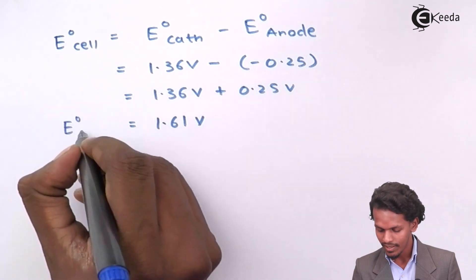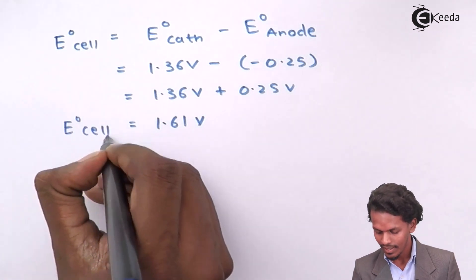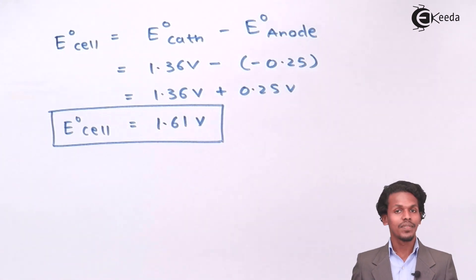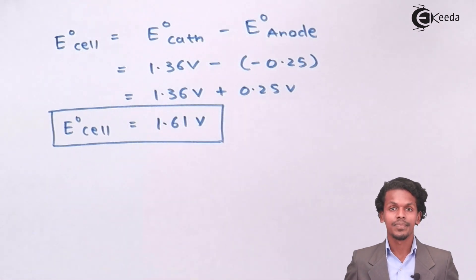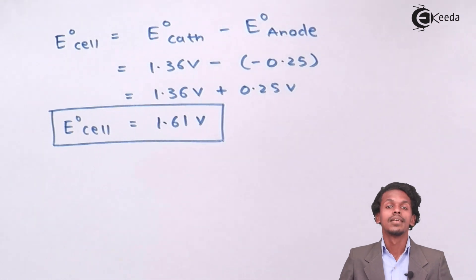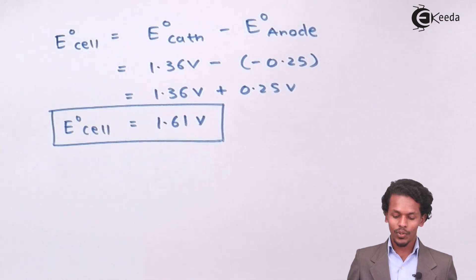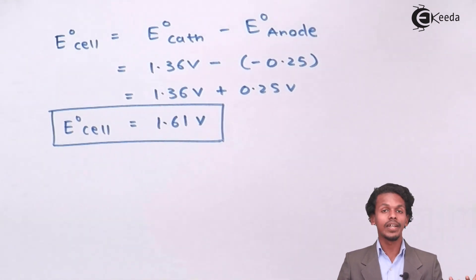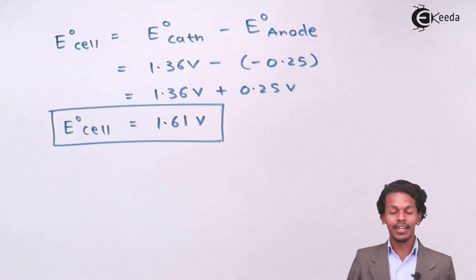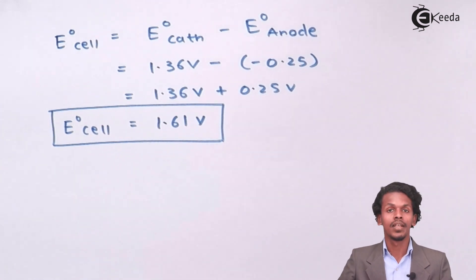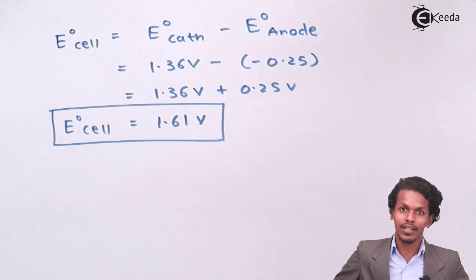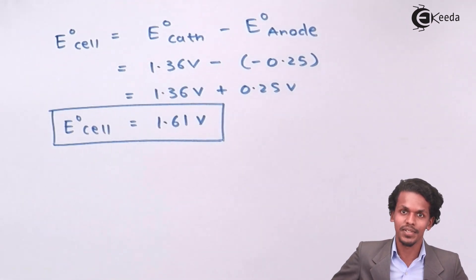So the overall E° or standard EMF of the cell is 1.61 V. Thank you friends for watching this video. I hope you now have an idea of how to calculate the EMF of the cell and the standard EMF of the cell. Please don't forget to subscribe to the channel and share this video with your friends. Thank you so much.